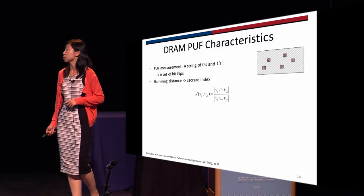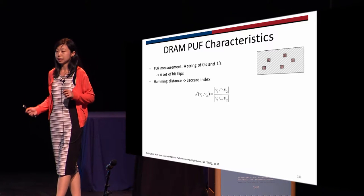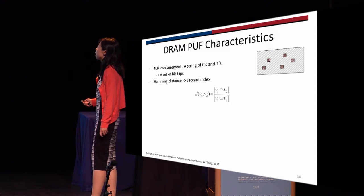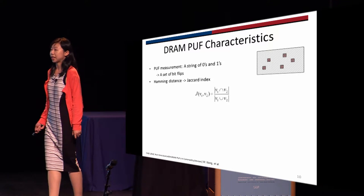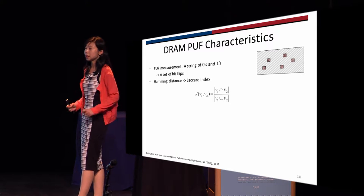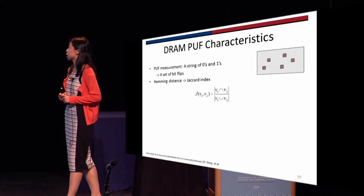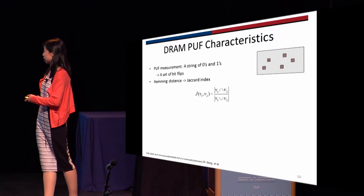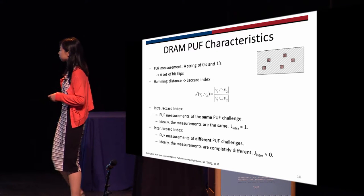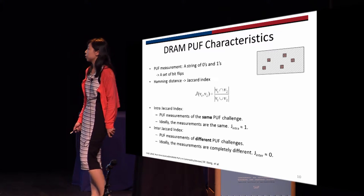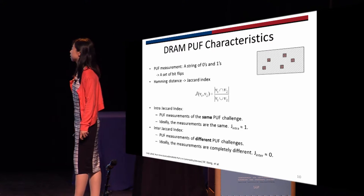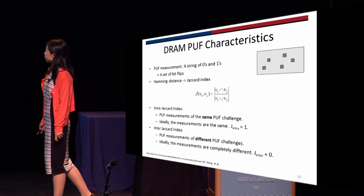Rather than using the traditional Hamming distance, we use the Jaccard index. The Jaccard index is usually used to evaluate the similarity of two sets — it's the cardinality of the intersection of two sets over the cardinality of the union of two sets. If the two sets are exactly the same, the Jaccard index is one; if they are completely different, it's zero.